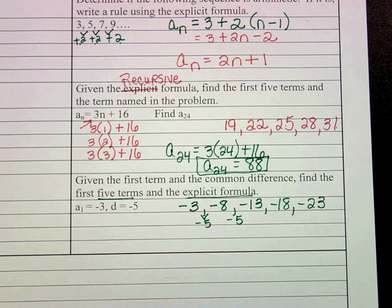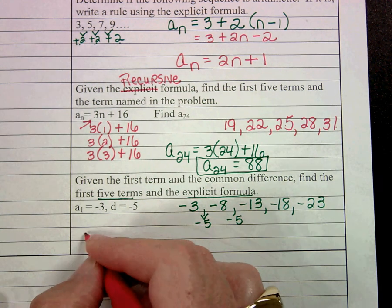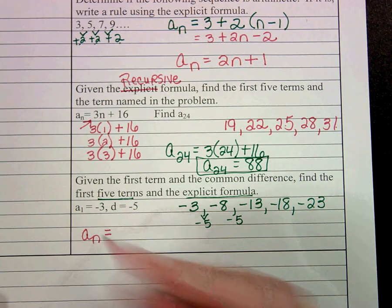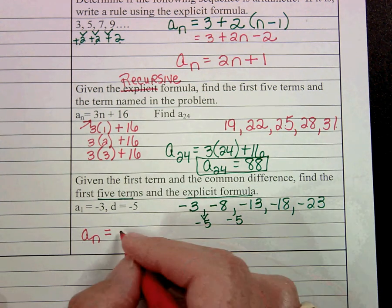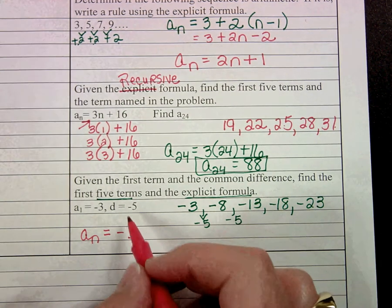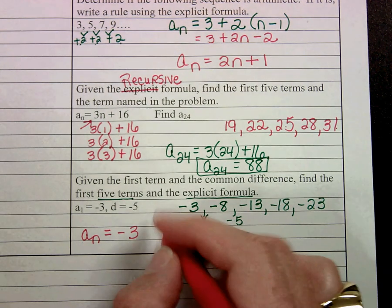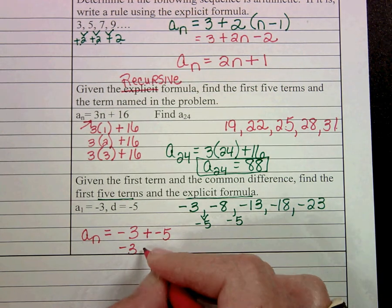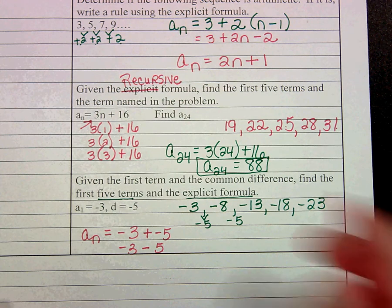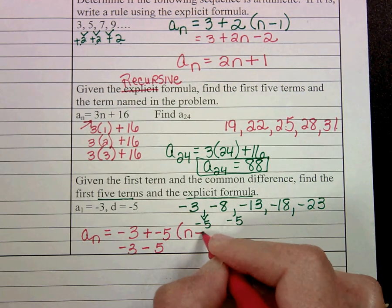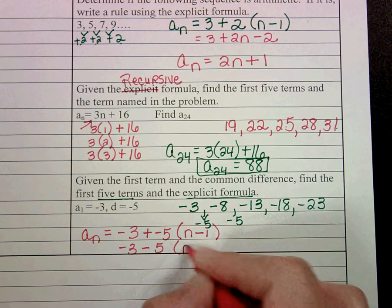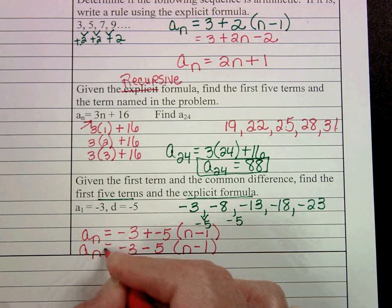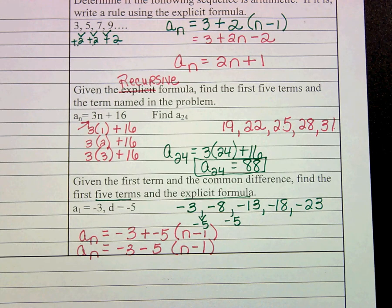When we write our explicit formula, again, super easy. a sub n equals our first term, negative 3. Our common difference is negative 5. Now we could write plus negative 5 if we wanted, or I want you to see, I'll write it a different way. I could just write minus 5. So either way is acceptable. Times n minus 1. And I'll show you both ways so that you can see it. Either way would be acceptable to write the explicit formula. They mean the same thing. And that's it. That's the explicit formula. I wouldn't want you to change it to any other form at this point.